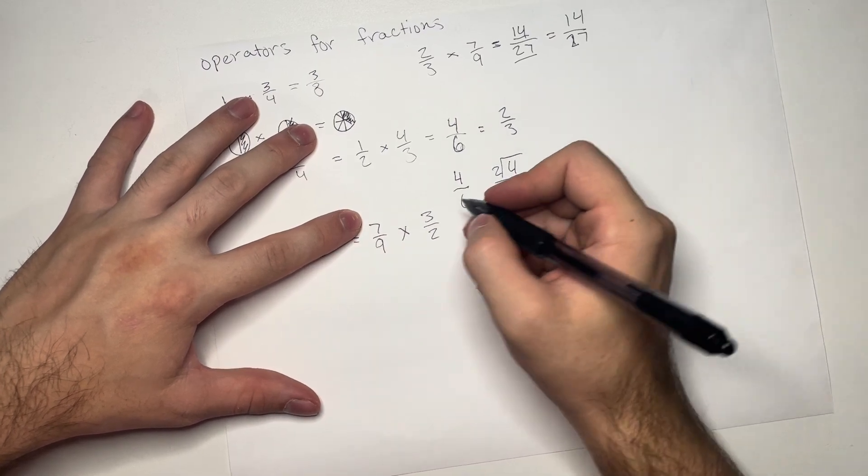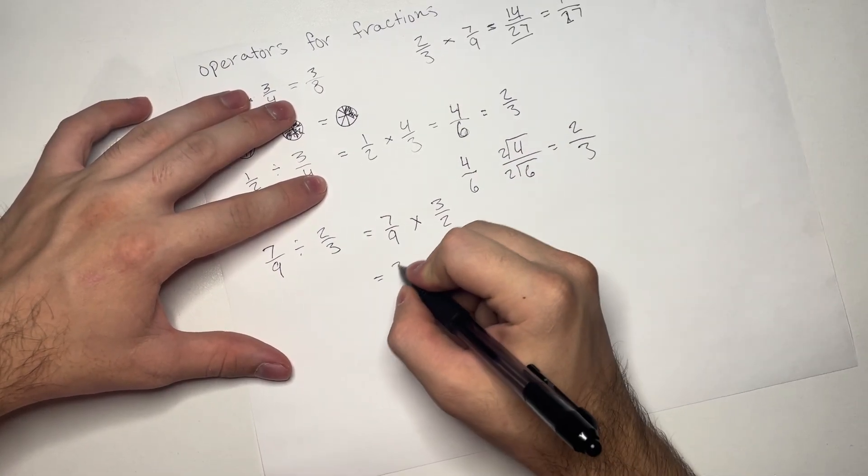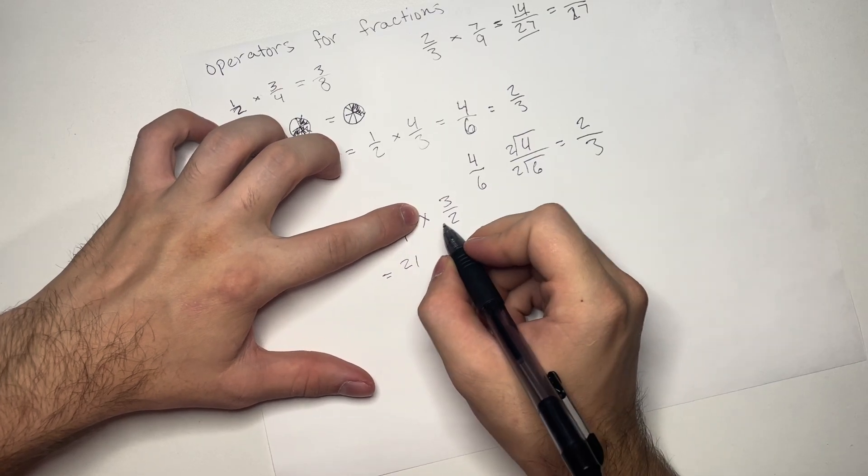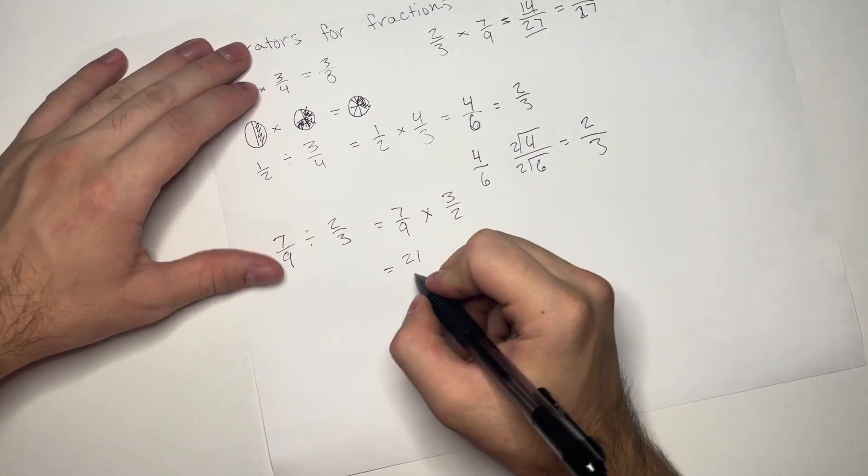So, 7 times 3 is 21. I'm going to write it down here. 21. And now, 9 times 2 is 18.